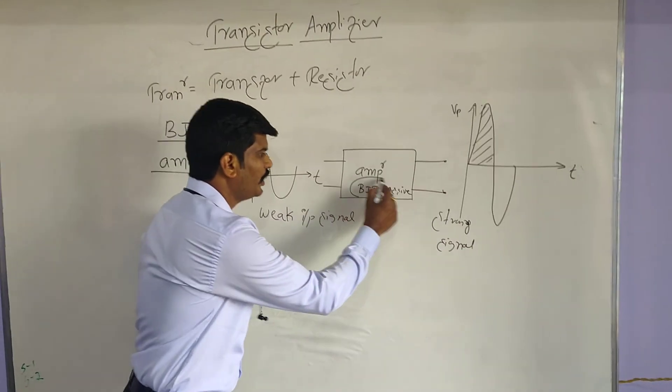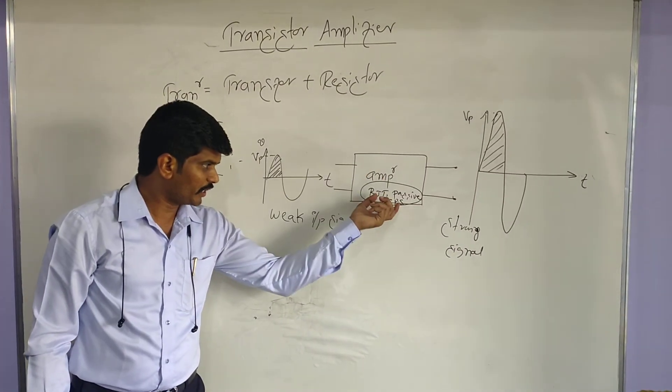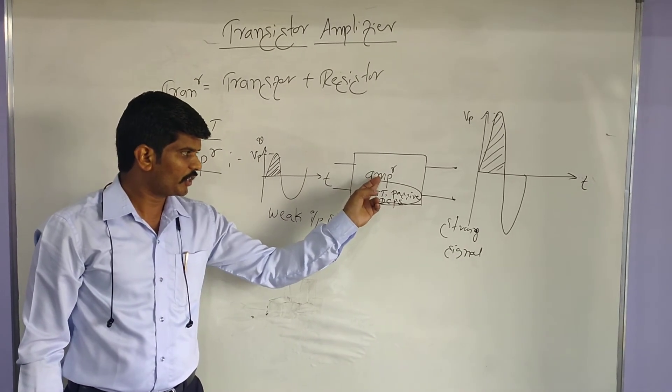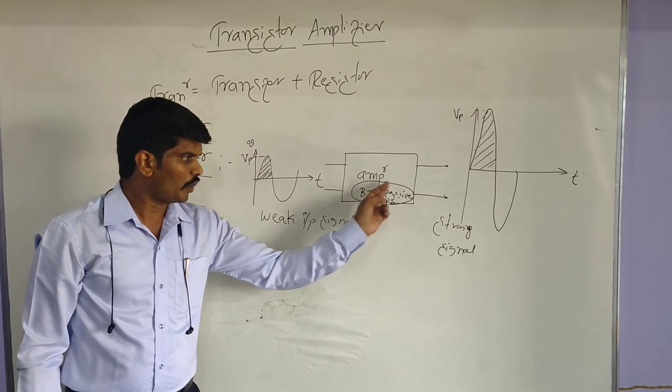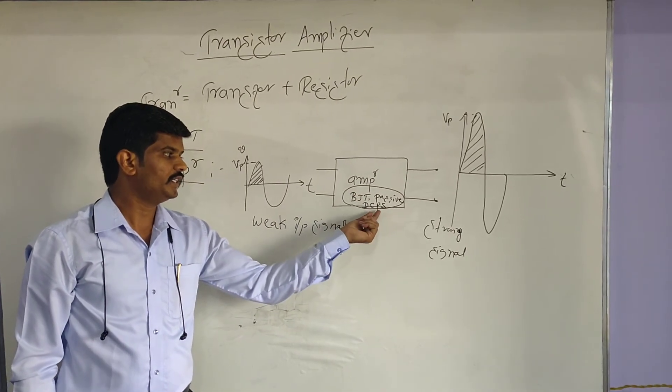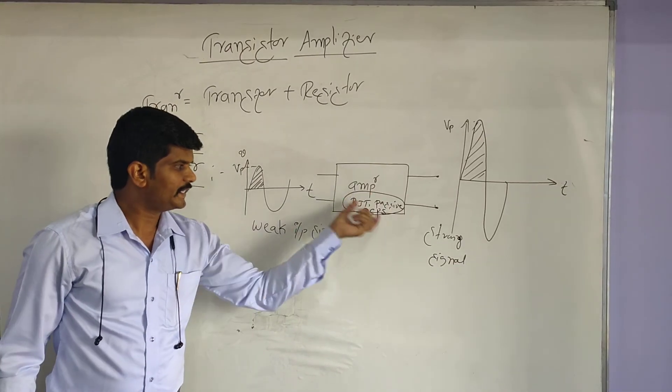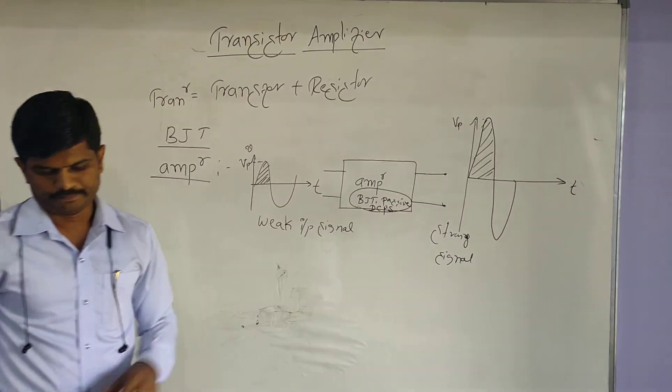See, this is a circuit. Basically, amplifier is a circuit. That circuit mainly consists of the prime element in the amplifier circuit is BJT. And BJT has passive components along with the DC power supply will give you the exact circuit of the amplifier. We can come to the point.